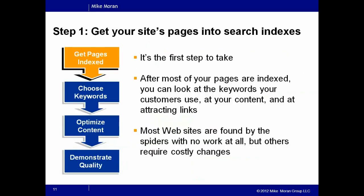Let's look at the four steps for SEO. The first one is to get your pages indexed. You might not realize that all of the search engines have something called a search index — a database that has all the pages in it. It looks like they're running around the internet finding pages when you search, but they're not — they ran around earlier and put them all in one place. The problem is if your pages aren't in the search index, they'll never be found.